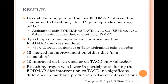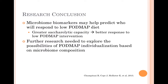Findings from the hydrogen breath test concluded that breath hydrogen was lower in participants during the low FODMAP intervention when compared to the typical American childhood diet. There was no significant difference in methane production between the two interventions. The authors concluded that microbiome biomarkers may predict responses to a low FODMAP diet. It was found that participants with greater saccharolytic capacity responded better to the FODMAP intervention. The authors called for further research to confirm these findings and explore the possibilities of FODMAP individualization based on microbiome composition.